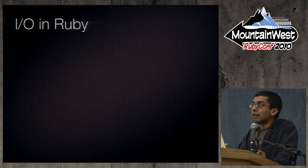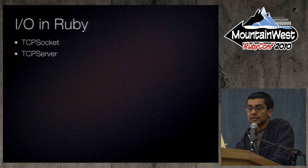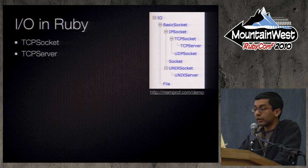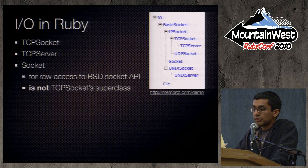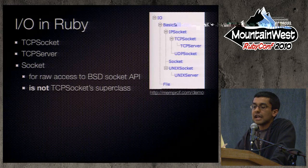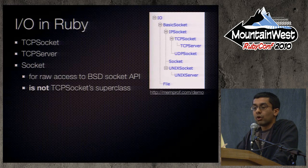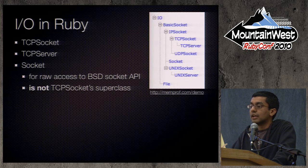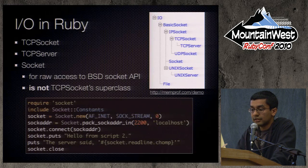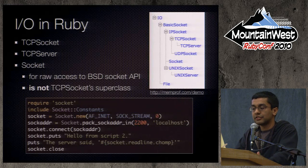Let's talk about how you do I/O in Ruby without Event Machine. There are a bunch of APIs — TCP socket and server, which is kind of expected. Here's the class hierarchy of I/O classes in Ruby. You'll notice there's a class Socket that's not actually the superclass of TCPSocket — it's its own little thing, and it provides raw access to the BSD socket API. You'd use it if you were writing C code to do similar things.